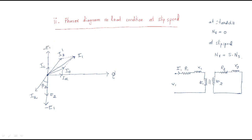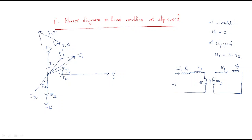We also have voltage drops in the stator. The drop across the stator resistance is I1·R1, which is parallel to I1. The drop across the stator reactance is I1·X1, which is always 90 degrees with respect to I1·R1. The combination of E1, the drop across the resistance I1·R1, and the drop across the reactance I1·X1 gives the supply voltage V1.